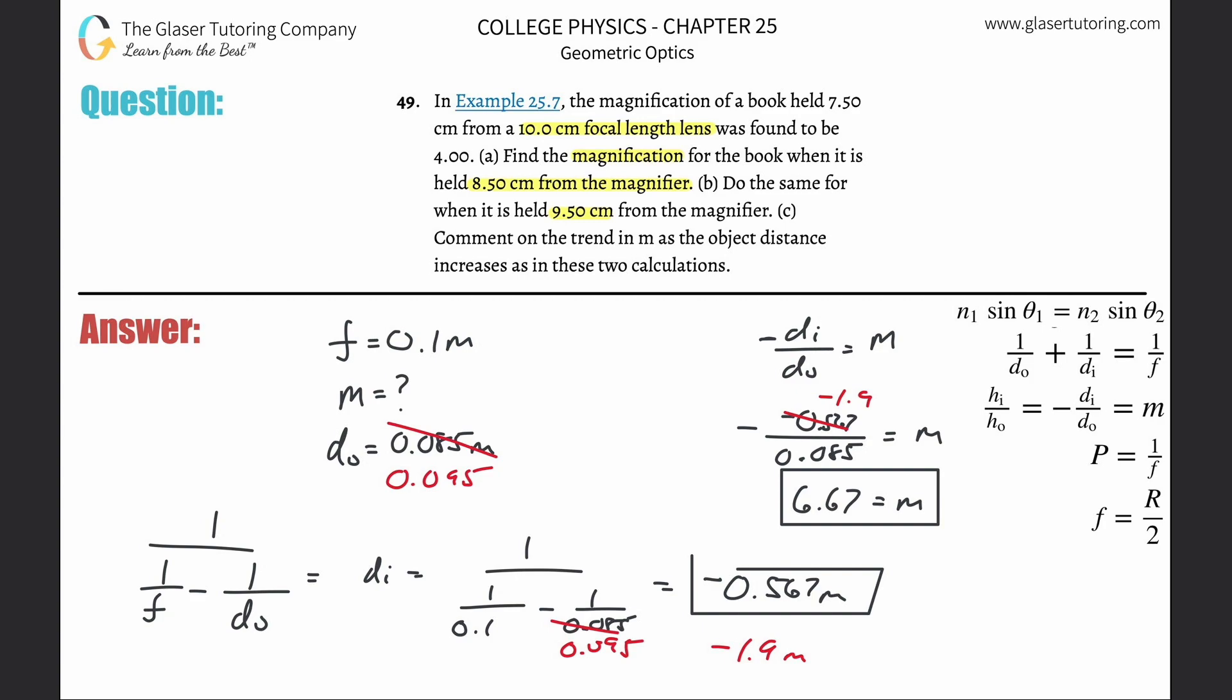Divide that by 0.095 since the number changed. And you're going to get a positive 20. So this turns out to be positive 20 now.